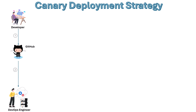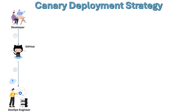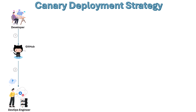Once the developer pushes his code to GitHub, he will inform his team and also the DevOps team. Now the DevOps engineer will think about which deployment strategy to use — is it a blue-green deployment, is it a rolling update, or is it a canary? As of now, we are discussing the canary deployment strategy, so let us think that he is picking up this canary deployment strategy.